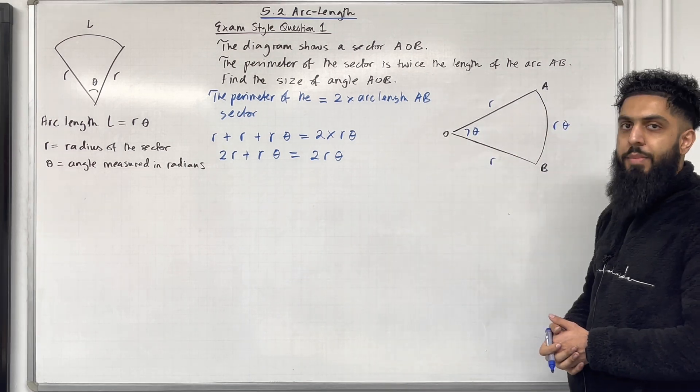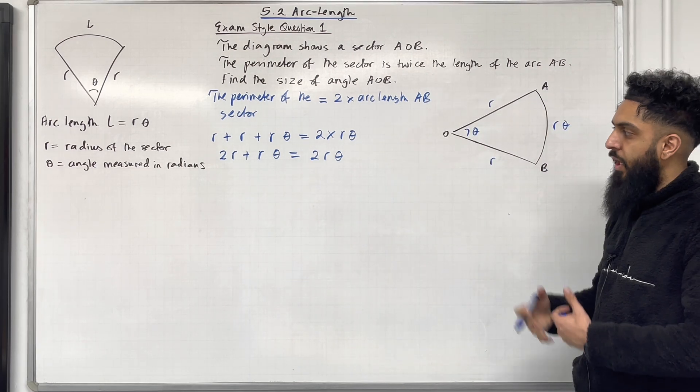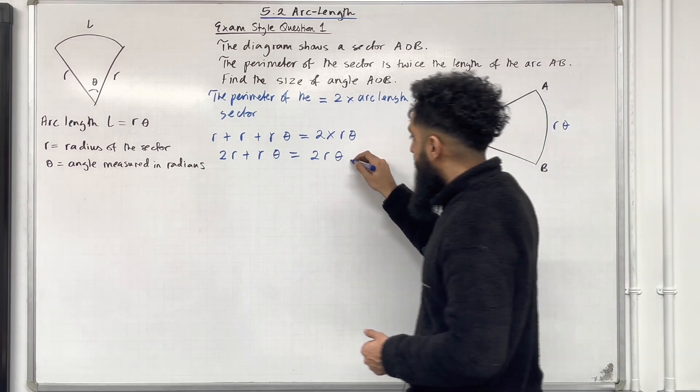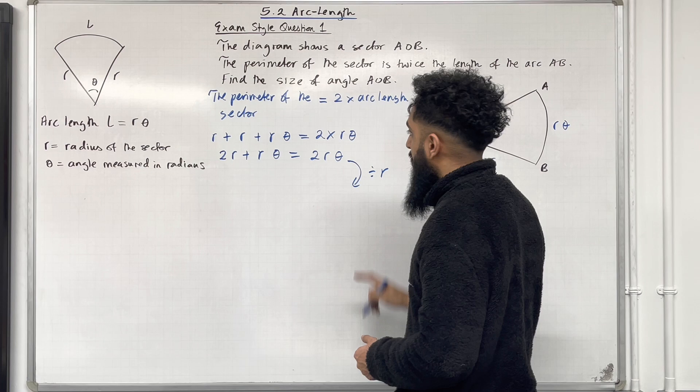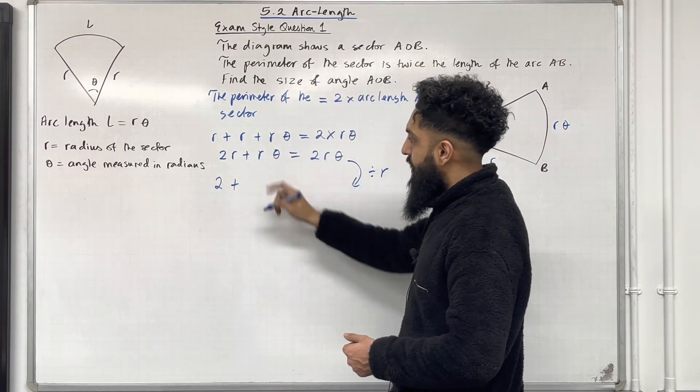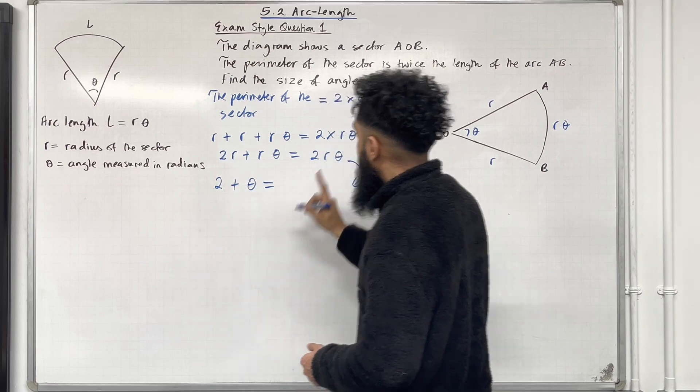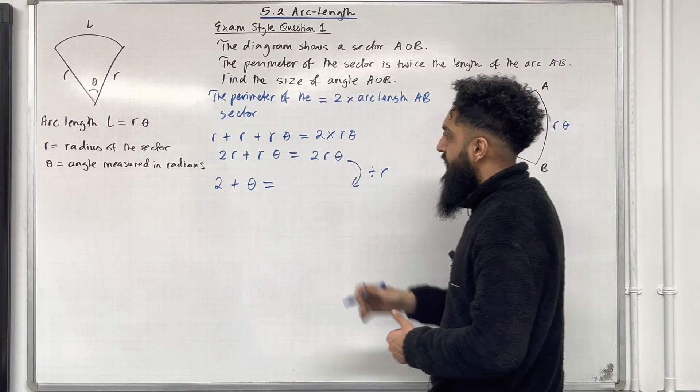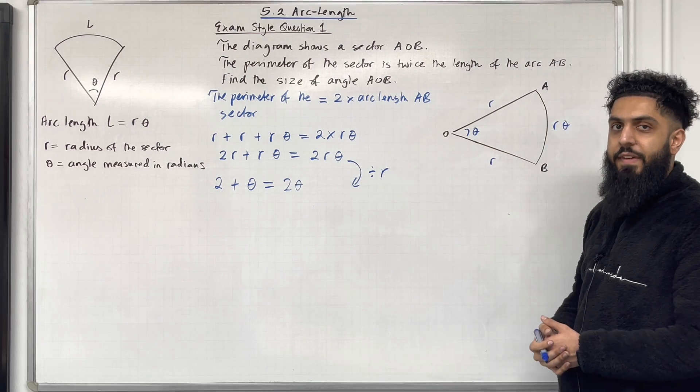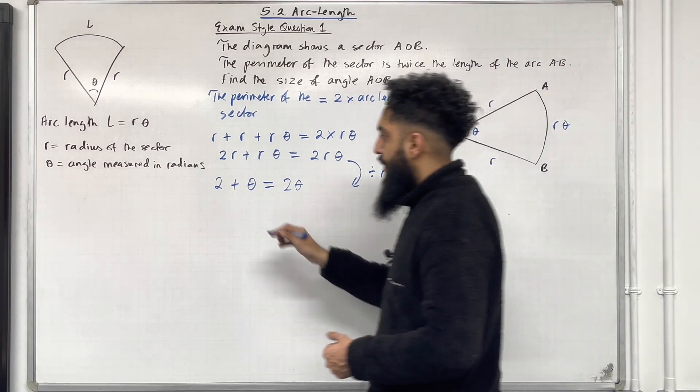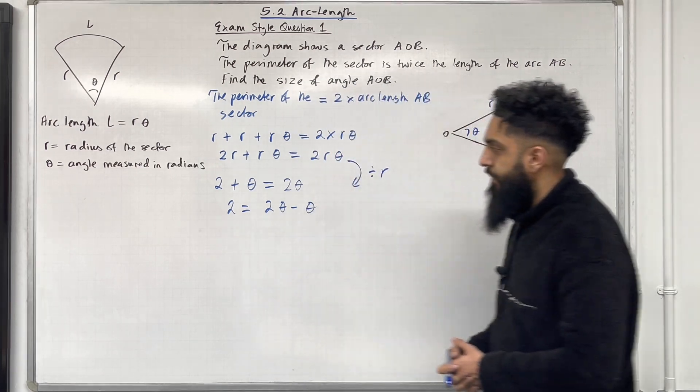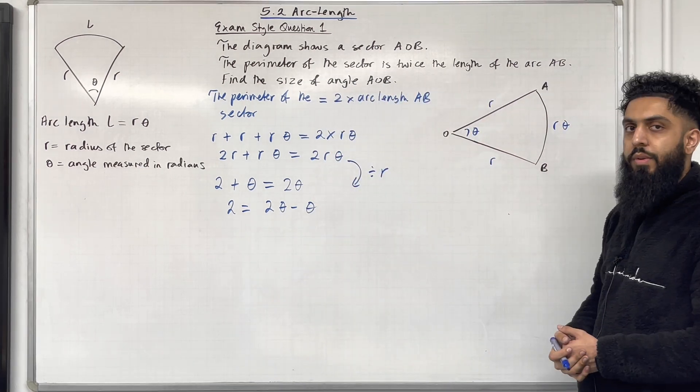We have R common between each term in this equation. So we can divide the entire equation by R. So if I divide the entire equation by R the first term reduces to 2. The second term reduces to theta. And the third term reduces to 2 theta. Now we can make theta the subject. So we've got 2 equals 2 theta minus theta. Hence 2 equals theta.